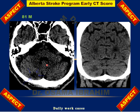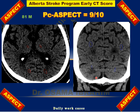In this daily work case, an 81-year-old male: there is a hypodense area representing infarction in the right cerebellar hemisphere. We deduct 1 point from the PC-ASPECTS. However, the left cerebellar hemisphere is normal, the occipital lobes appear normal, and the pons and midbrain are normal. So the only point deducted is from the one cerebellar hemisphere, giving a PC-ASPECTS of 9 out of 10.